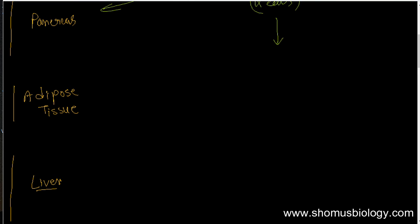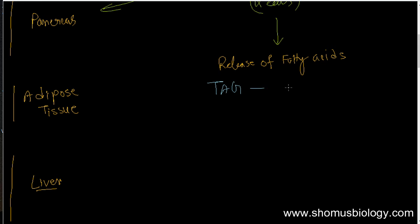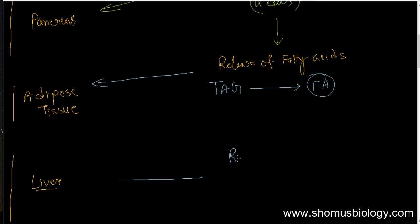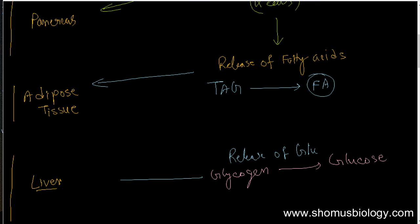This leads to the release of fatty acids produced by the hydrolysis of triacylglycerols. All those triacylglycerols stored in the adipose tissue are broken down into fatty acids, which can now be utilized. In the liver, glycogen stored there produces glucose — in the presence of specific enzymes — and releases it.